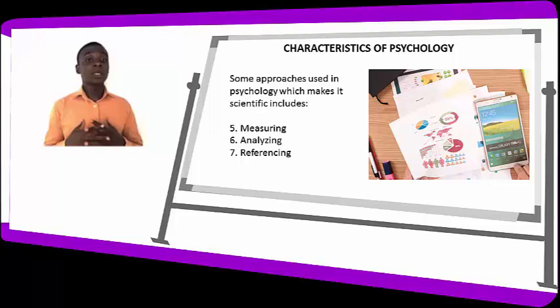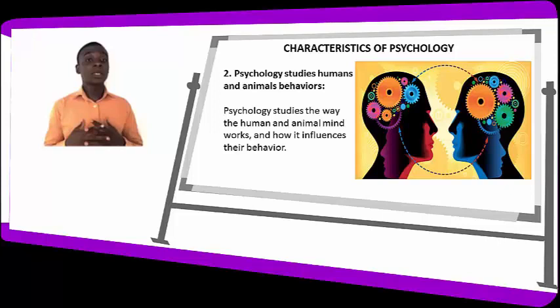The next characteristic of psychology is that psychology studies human and animal behavior. Psychology studies the way the human and animal mind works and how it influences their behavior — why humans tend to understand better than other animals, why humans are called higher animals, and why humans and animals respond to stimuli in different ways. Psychology studies the human mind and how it influences behavior.